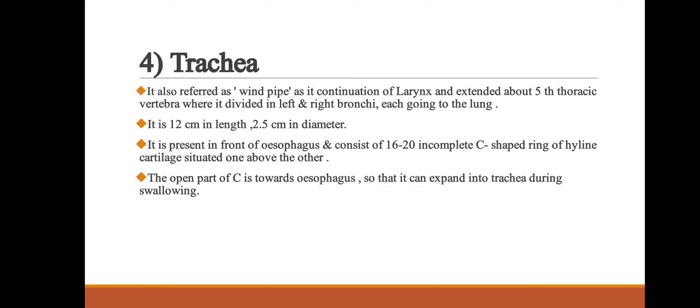Next, we discuss the trachea, also referred to as the windpipe. It is a continuation of the larynx and extends to about the fifth thoracic vertebra, where it divides into left and right bronchi, each going to a lung. It is 12 cm in length and 2.5 cm in diameter. It is present in front of the oesophagus and consists of 16 to 20 incomplete C-shaped rings of hyaline cartilage situated one above the other. The open part of the C faces the oesophagus so that it can expand into the trachea during swallowing.